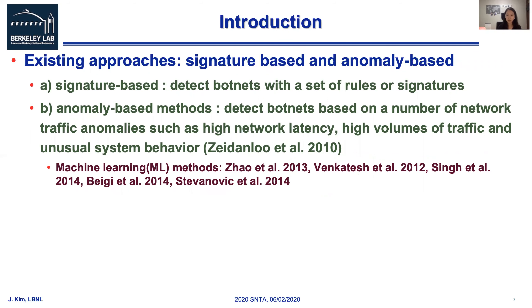There have been many studies introducing various methodologies for botnet detection, often classified in two types: signature-based methodology and anomaly-based methodology. Signature-based methodology detects botnet's malicious connections by referencing a set of rules. Although this approach requires a relatively small amount of computation, it is significantly restricted to detecting well-known botnets only. On the other hand, anomaly-based techniques identify botnets by detecting unusual system behaviors such as high network latency and high volumes of traffic. As a tool for anomaly detection, machine learning methods have been applied for characterizing botnet behavior. This kind of approach is what we focus on in this paper.